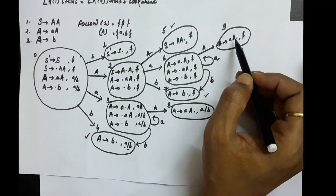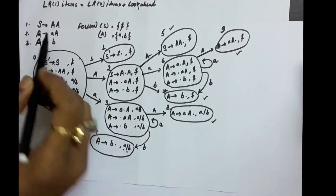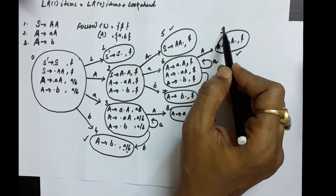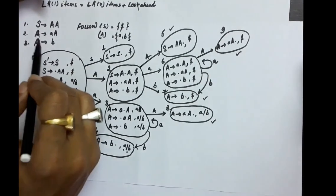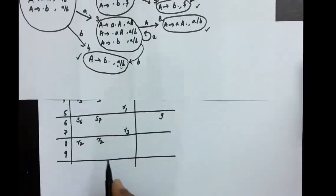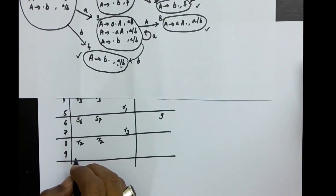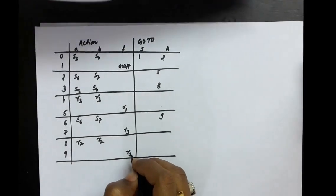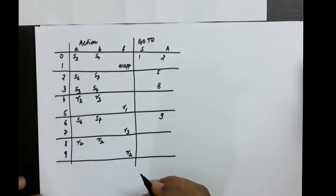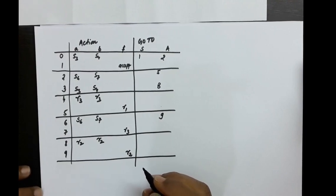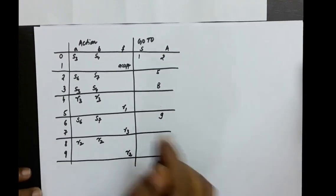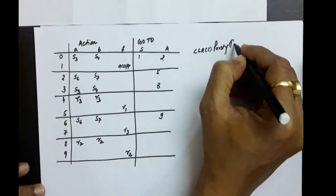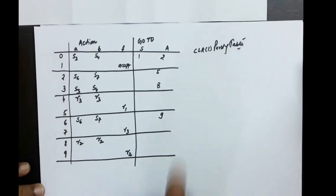The eighth state is saying A produces small a capital A, so this is R2 — production number 2. You will be using R2 in row number 8 at positions A and B: R2 and R2. In state 9, this is also production number 2, so at the place of dollar in row number 9, you will be writing R2. This completes the CLR1 parsing table.